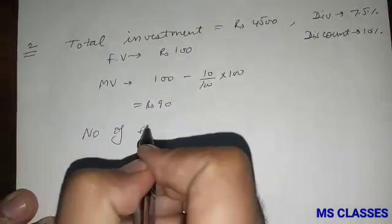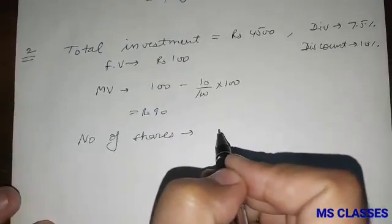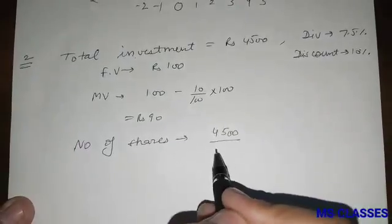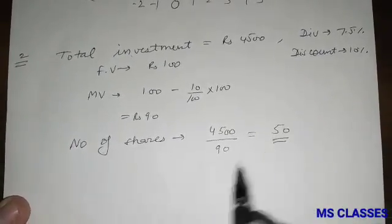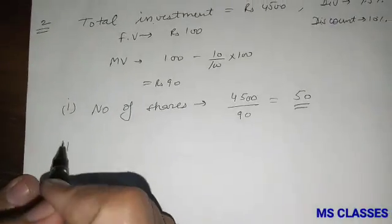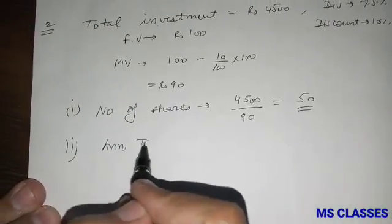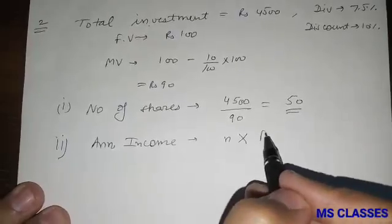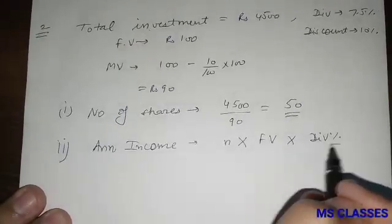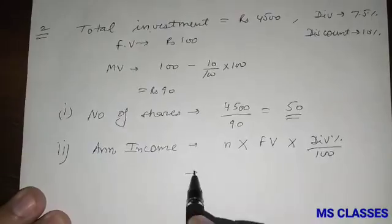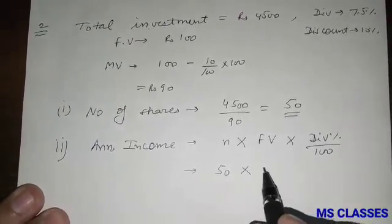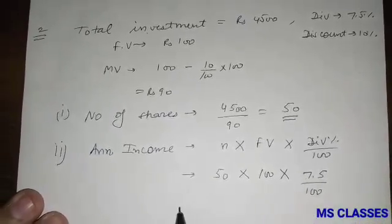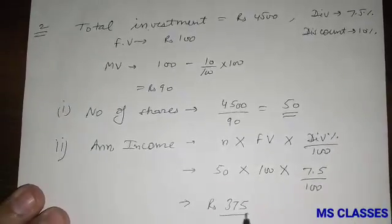The number of shares is found using total investment divided by market value: 4500 divided by 90 equals 50 shares. For the annual income, the formula is number of shares multiplied by face value multiplied by dividend percentage divided by 100. That gives 50 × 100 × 7.5 / 100, which equals rupees 375.